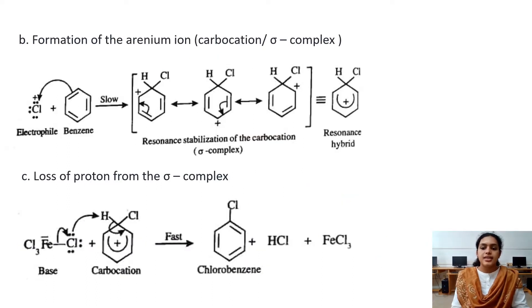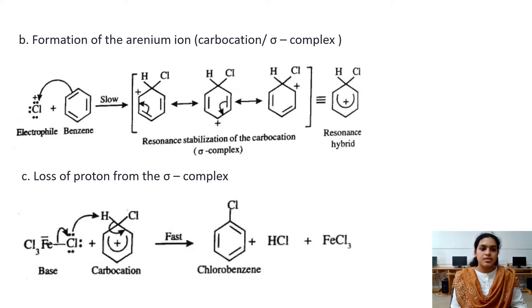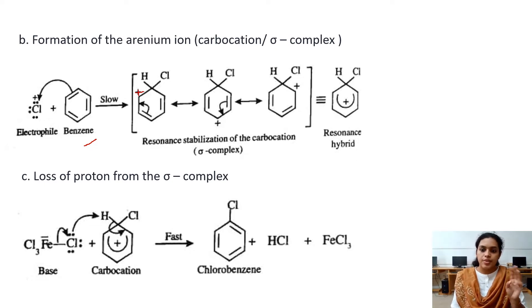In the second step, the formed electrophile Cl+ attacks the benzene ring to give the sigma complex. The positive charge is on an adjacent carbon atom and the complex is resonance stabilized — we get three resonance structures and a resonance hybrid.